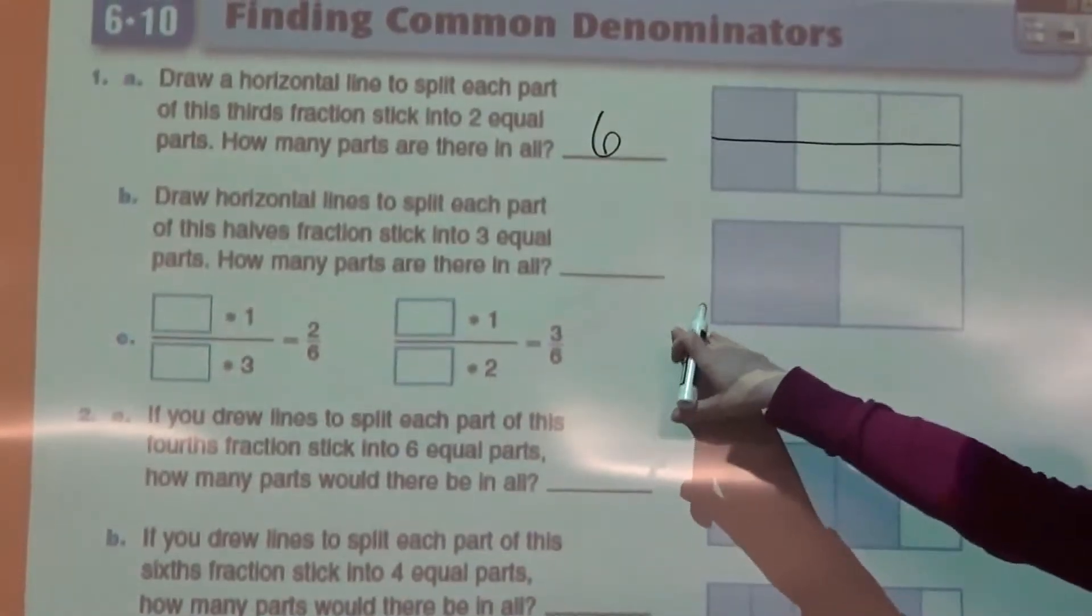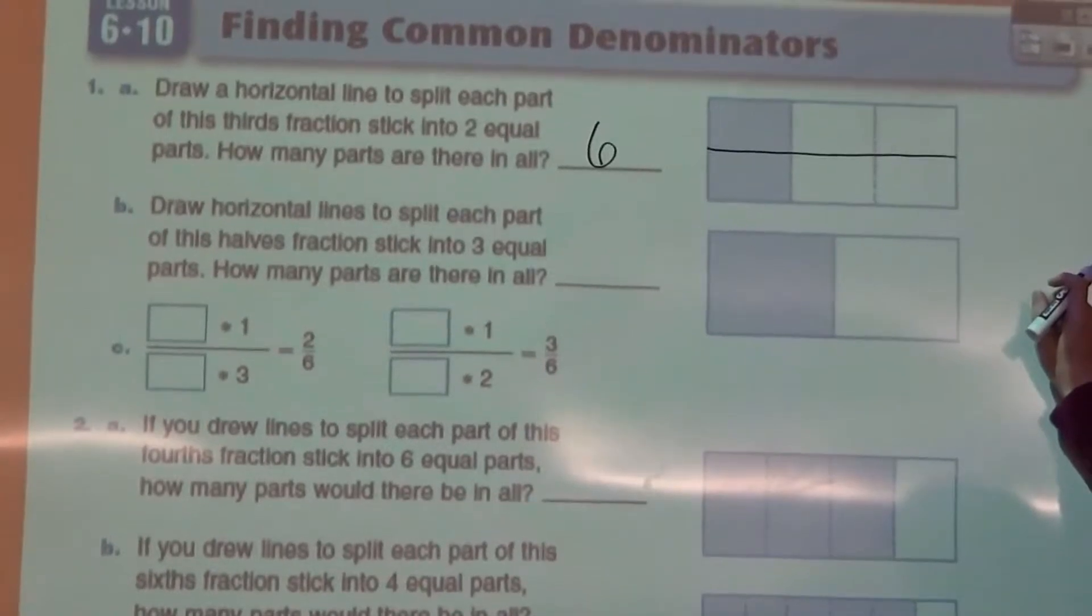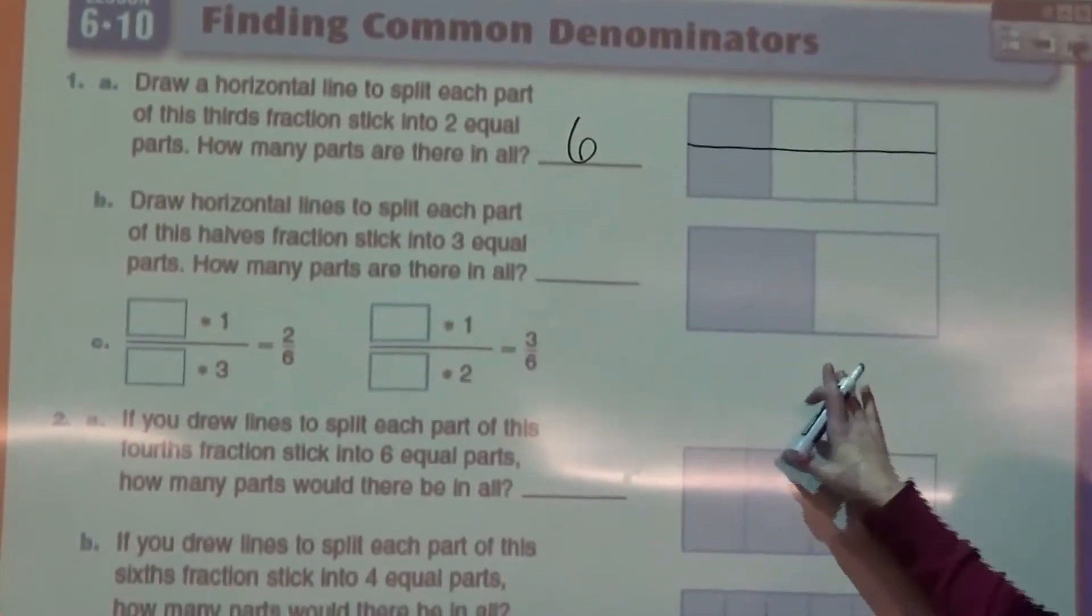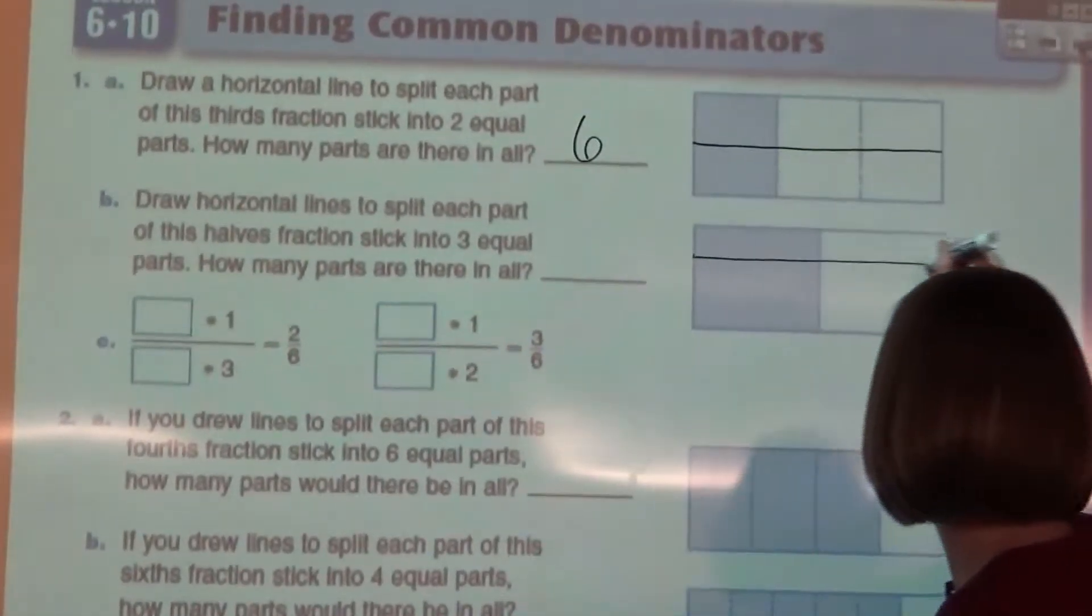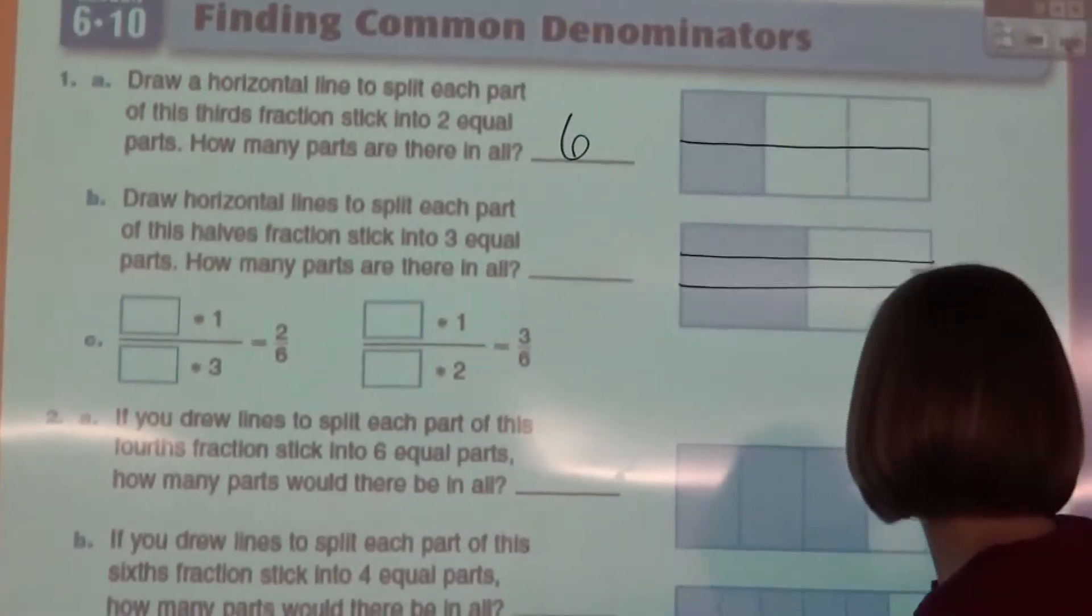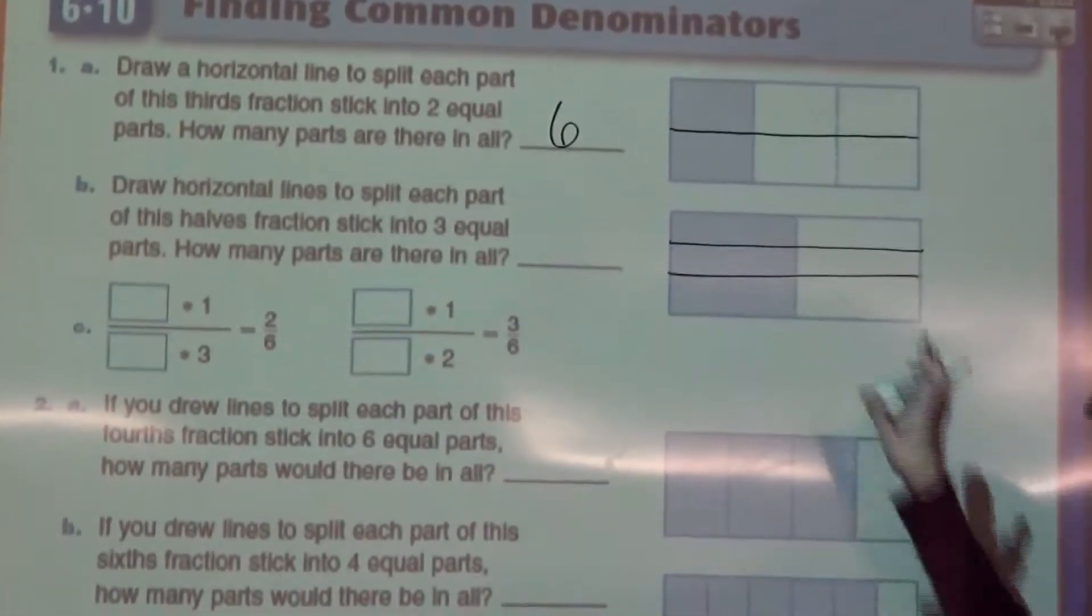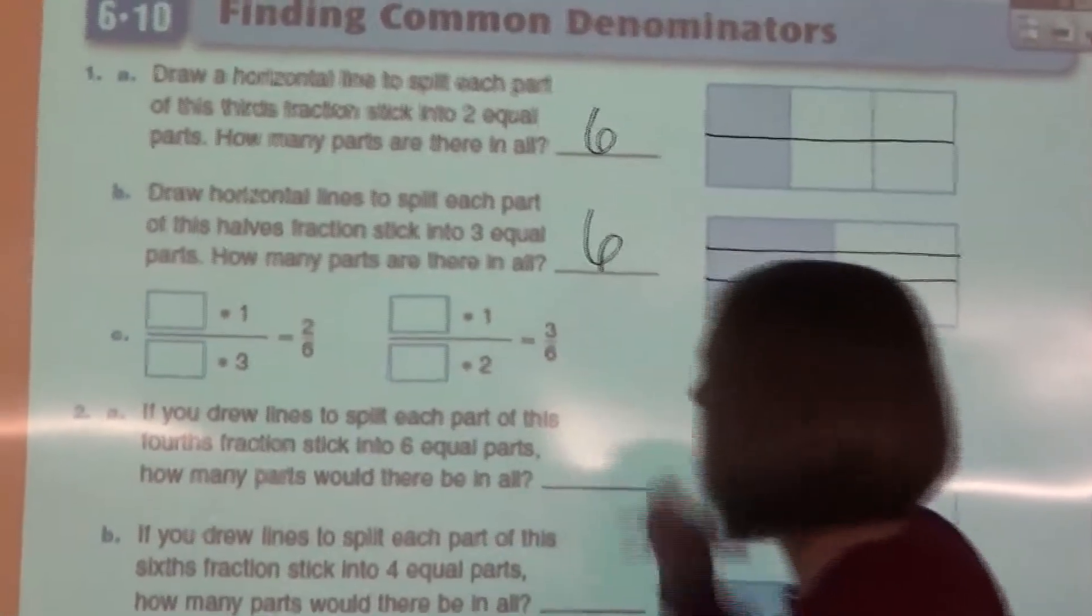For part B, it says draw horizontal lines to split each part of this halves fraction stick into three equal parts. So now we have our halves and we want to split it into three equal parts. Those aren't quite equal, but they're pretty close. So how many are there all together? One, two, three, four, five, six. In each of those, we have six parts.